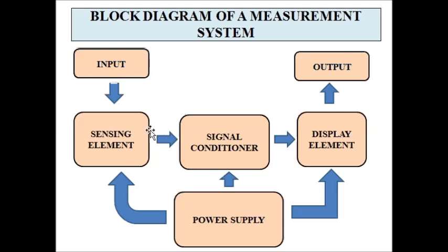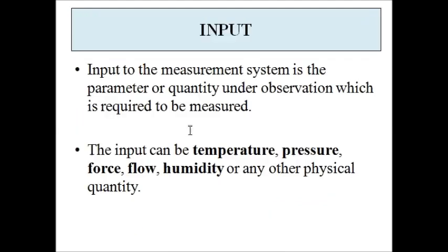The basic elements of a measurement system involve a sensing element or sensor, a signal conditioner, and a display element. The power supply unit provides the necessary voltage to all the elements — the sensing element, the signal conditioners, and the display element. The input is the physical quantity which is to be measured, and the output is a representation of the input signal.